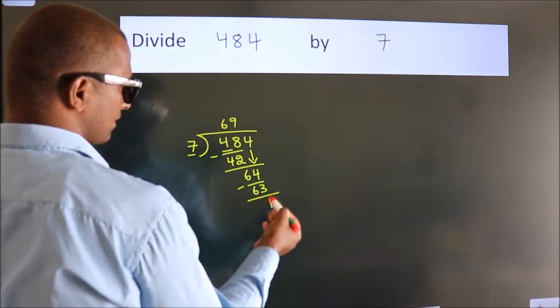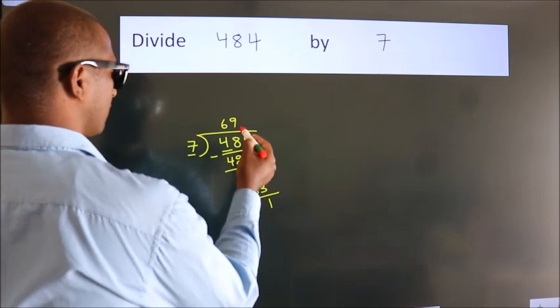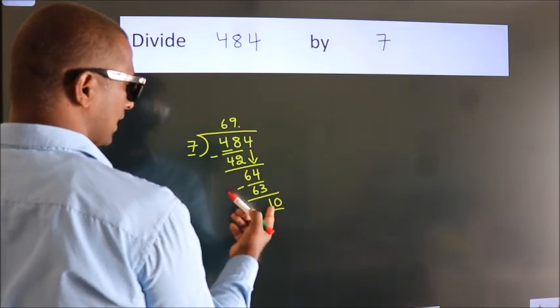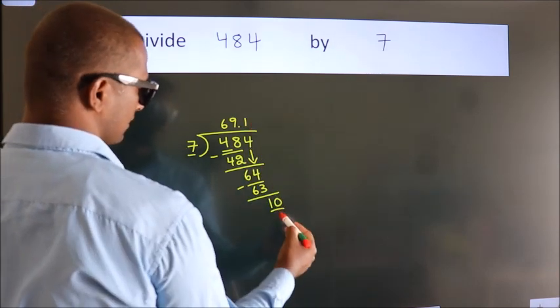After this, no more numbers to bring it down. So what we do is, we put dot, take 0. So 10. A number close to 10 in 7 table is 7, 1, 7.